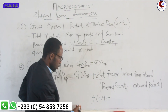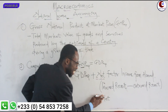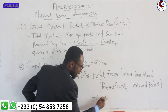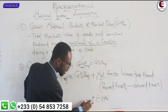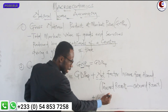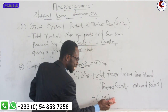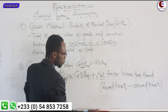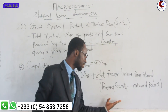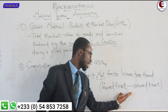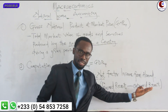When you see Net Factor Income from Abroad in a question and the figure is, say, negative 100, don't be confused. You just bring your plus sign and put the negative in the bracket, and it will still be minus. This happens when the inward remittance is less than the outward remittance.